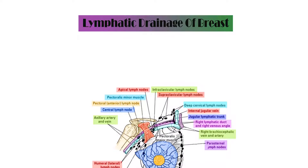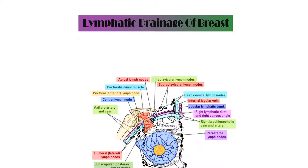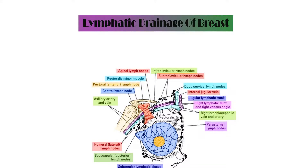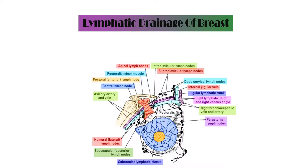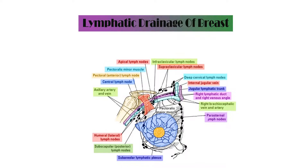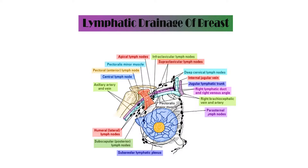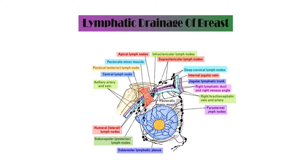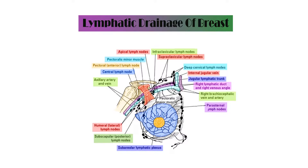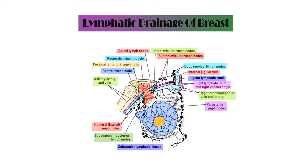The lymphatics of the deep surface of the breast pass through the pectoralis major muscle and pierce the clavipectoral fascia to reach the apical group of lymph nodes and also the internal mammary lymph nodes. The lymphatics of the lower and inner quadrant communicate with the subdiaphragmatic and subperitoneal lymphatic plexuses after crossing the costal margin and piercing the anterior abdominal wall through the upper part of the linea alba.